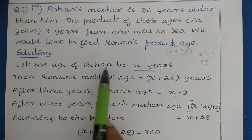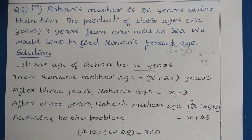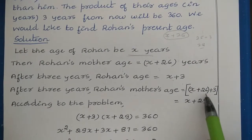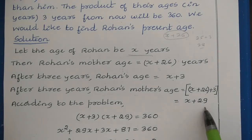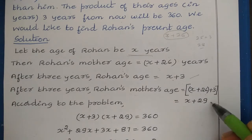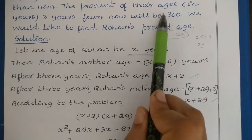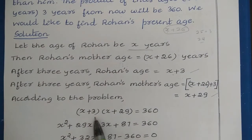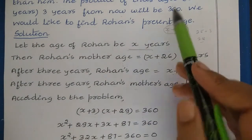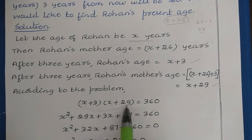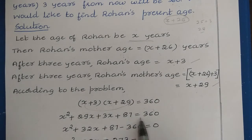Similarly, Rohan's mother's age after 3 years is x + 26 + 3, which equals x + 29. Now we apply the problem condition: the product of their ages after 3 years is (x + 3)(x + 29) = 360. Expanding: x² + 29x + 3x + 87 = 360.